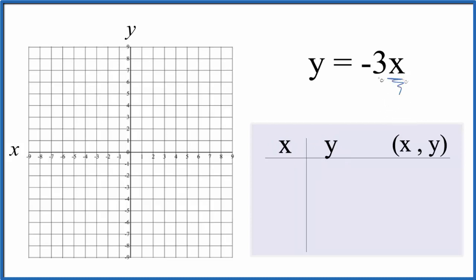So let's just put some values in for x. Why don't we start with zero? If I have negative 3 times 0, that gives me 0. How about 1? Negative 3 times 1, that's negative 3. And if we do negative 1, negative 3 times negative 1, that just gives us 3.